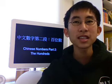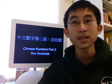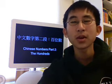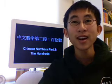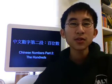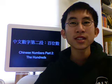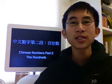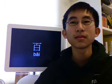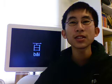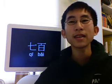Counting to 99 was easy, but going up to the hundreds may be a bit difficult. So hang on. The hundreds are formed the same way as the tens. The Chinese word for hundred is 百, so 700 is 七百.